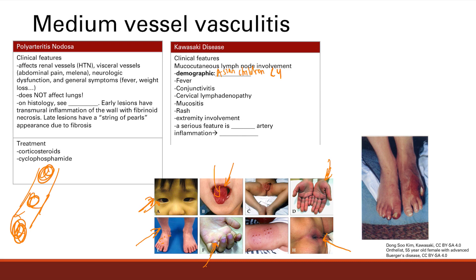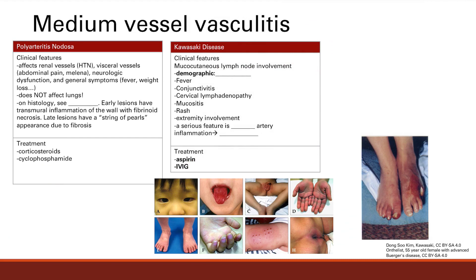Treatment is aspirin and IVIG. This is an exception — normally you don't give aspirin to kids because of the risk of Reye syndrome, a liver and brain injury. But Kawasaki disease is the one case where aspirin is given to children. IVIG is used because it binds antibodies and is used for inflammatory diseases.